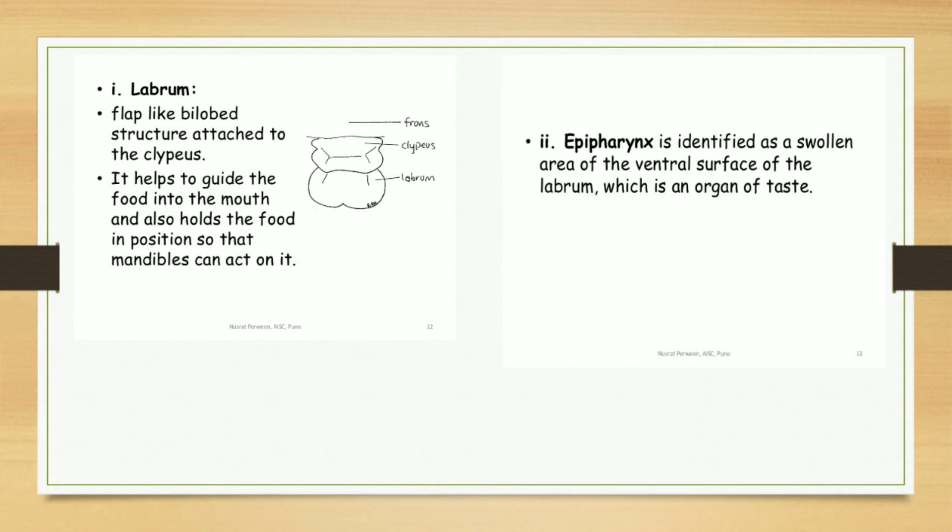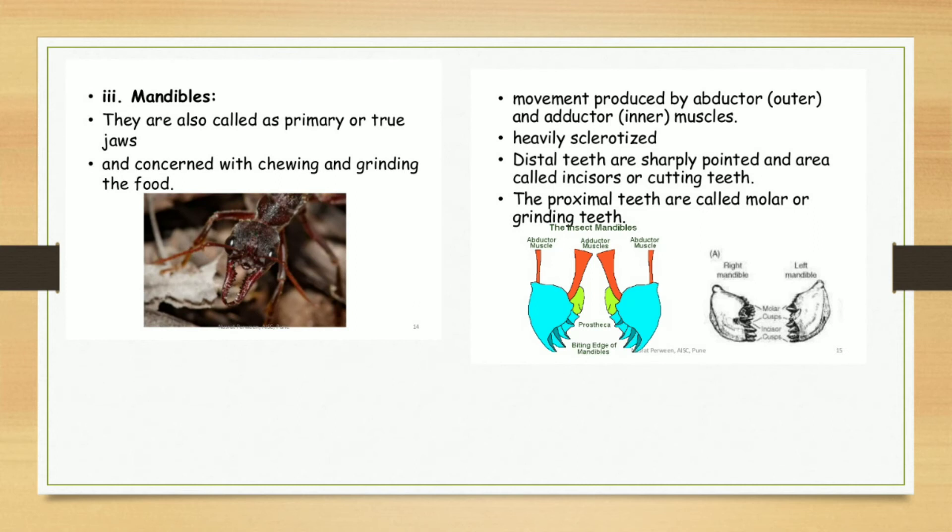Mandibles are also called primary or true jaws. The mandibles are concerned with chewing and grinding the food. These are helpful for the chewing and grinding of the food.